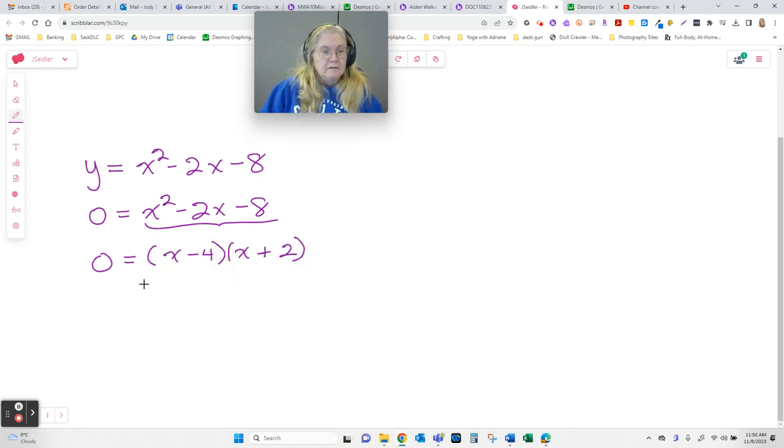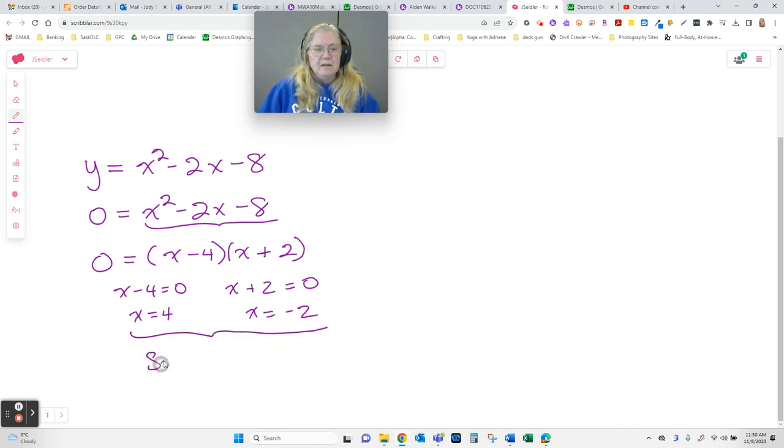When I have (x - 4)(x + 2) = 0, either this one is 0 or this one is 0. And I solve these linear equations using the same old skills we've always got. And there are my solutions.